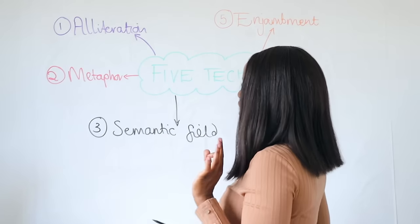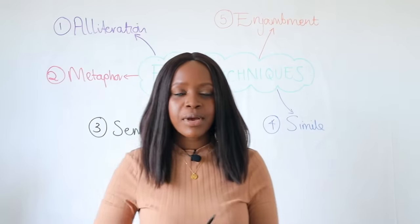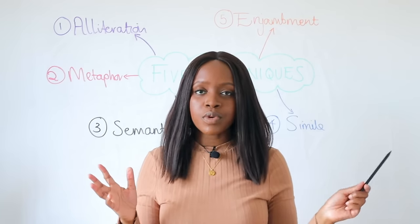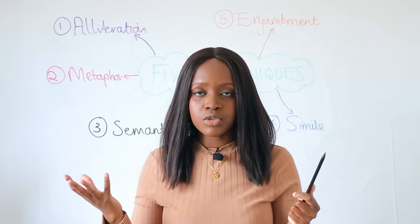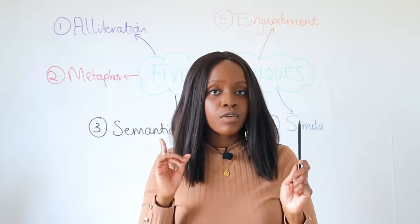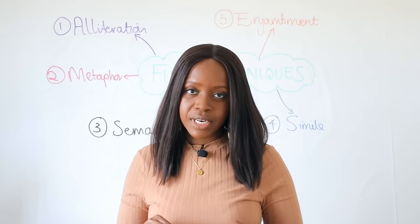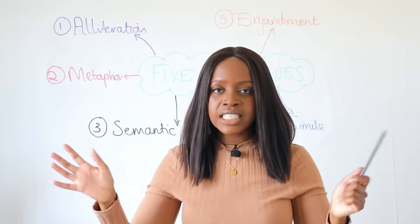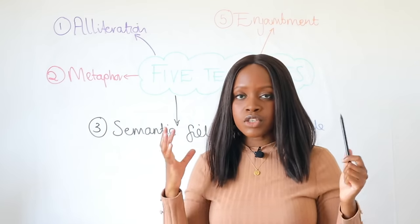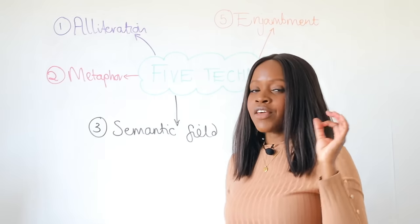The first technique to always remember, which will always come up in any poem, is alliteration. Alliteration is two or more words within a line of poetry that start with the same letter — for example, 'big bad bear' starts with B. The only exception is words starting with S, which we call sibilance, like 'slithering snake.' Aside from S, any other letters where two or more words start with the same letter is what we call alliteration.